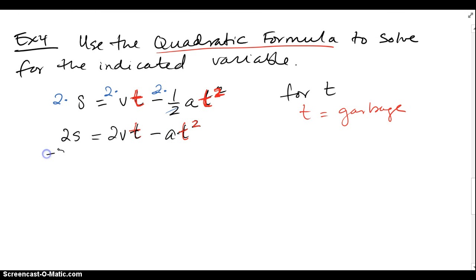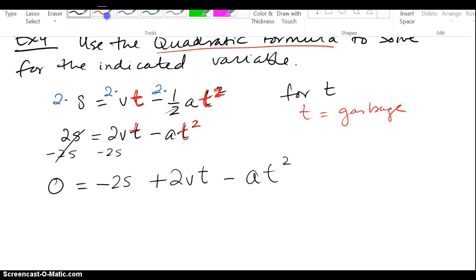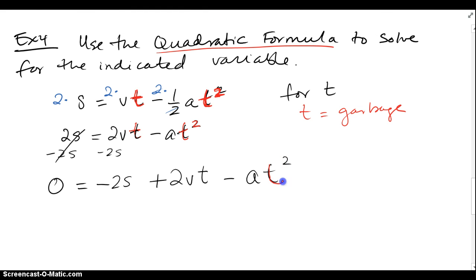So I can set it equal to 0. So minus 2s is my constant, then I have this term, which is actually a positive term, and then minus a t squared. So here's my quadratic equation, with always my eye on the t being the variable.